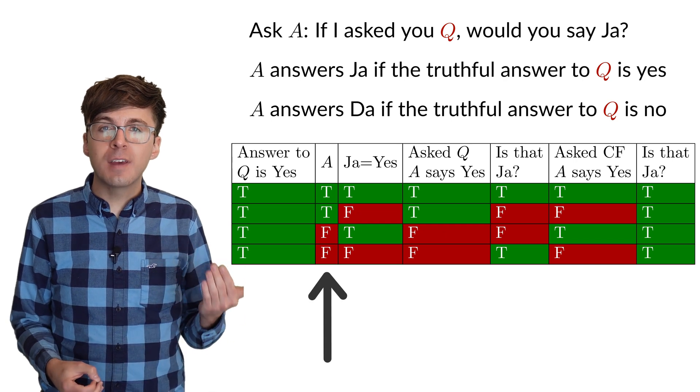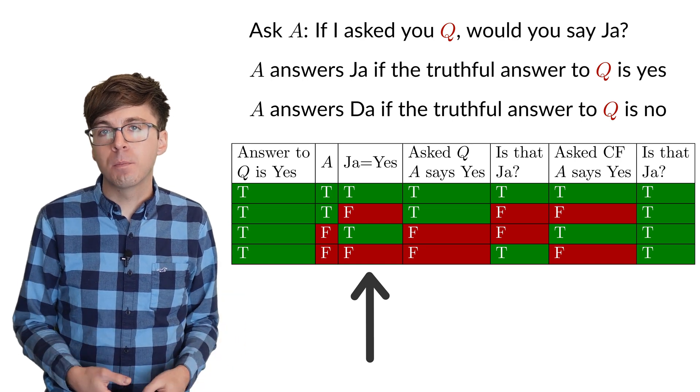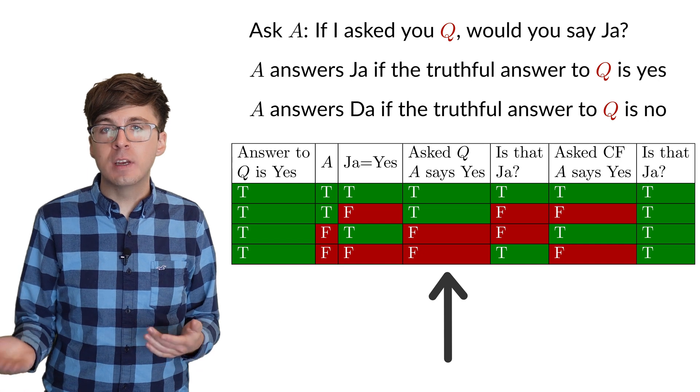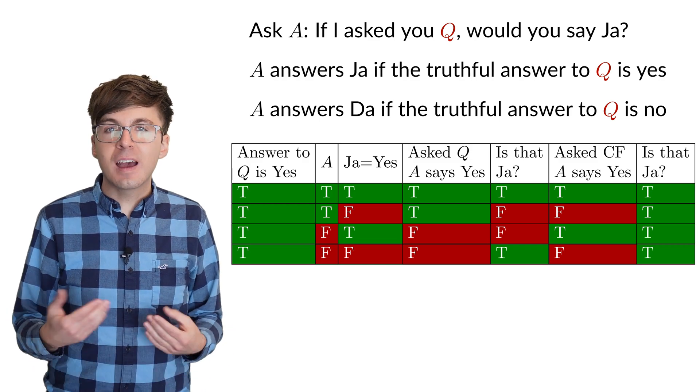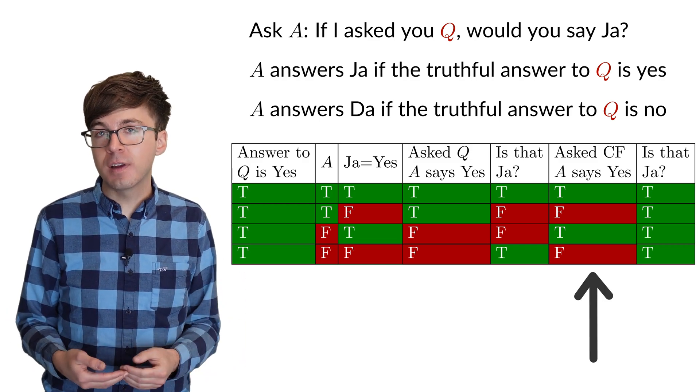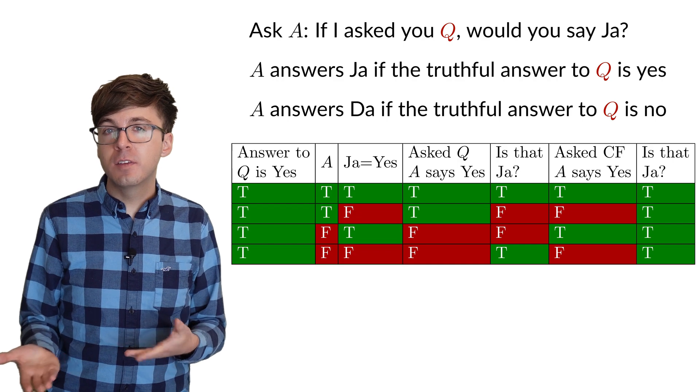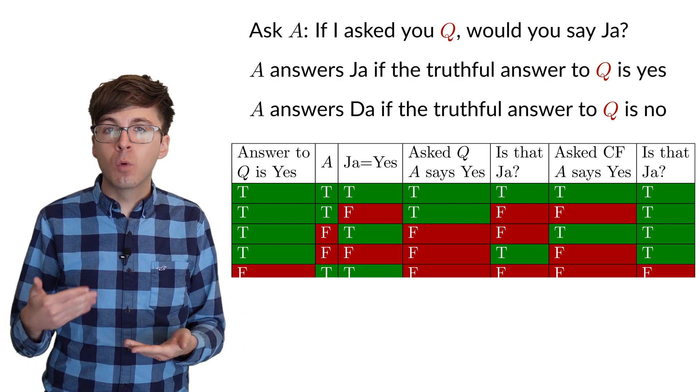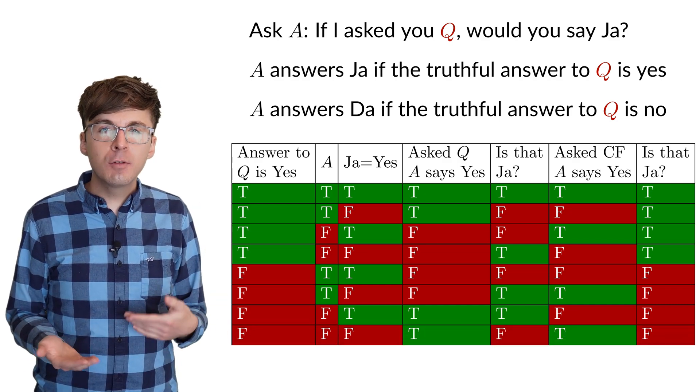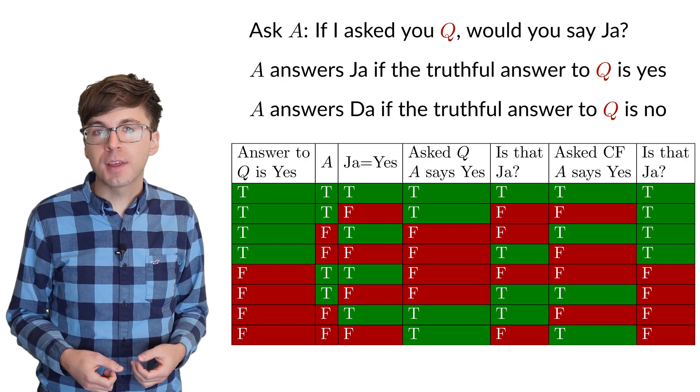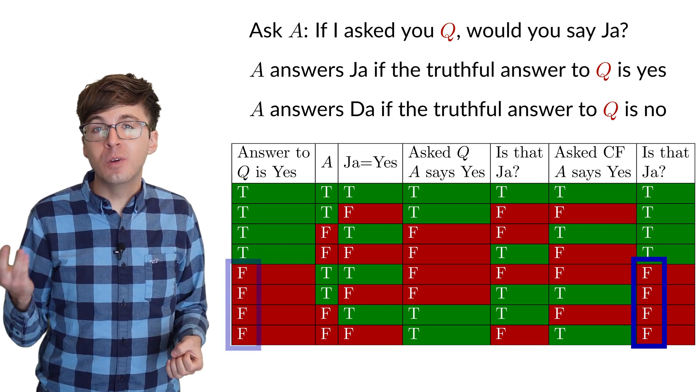In the first column, we check if A is true or false. And in the second column, we check if ya means yes or no. Then we have a column for how A would answer the question Q and another column to decide if that answer is the same as ya. Lastly, we can check how A will answer the counterfactual question and whether or not that answer is the same as ya. These are the four cases that we already solved, and now we can add four more cases for when the truthful answer to the question Q is no. If we ask either true or false a counterfactual question like this, we'll get an answer of ya if Q is a true statement and da if Q is a false statement.